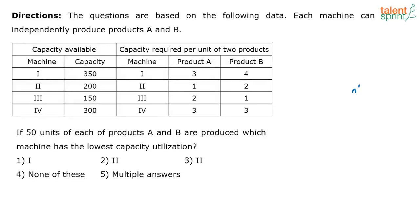The next question is on data interpretation - a very different question from the usual kinds, but not very difficult if we understand what they're actually trying to say. The questions are based on the following data: each machine can independently produce products A and B. Machine one capacity is given, along with the capacity required per unit of two products.